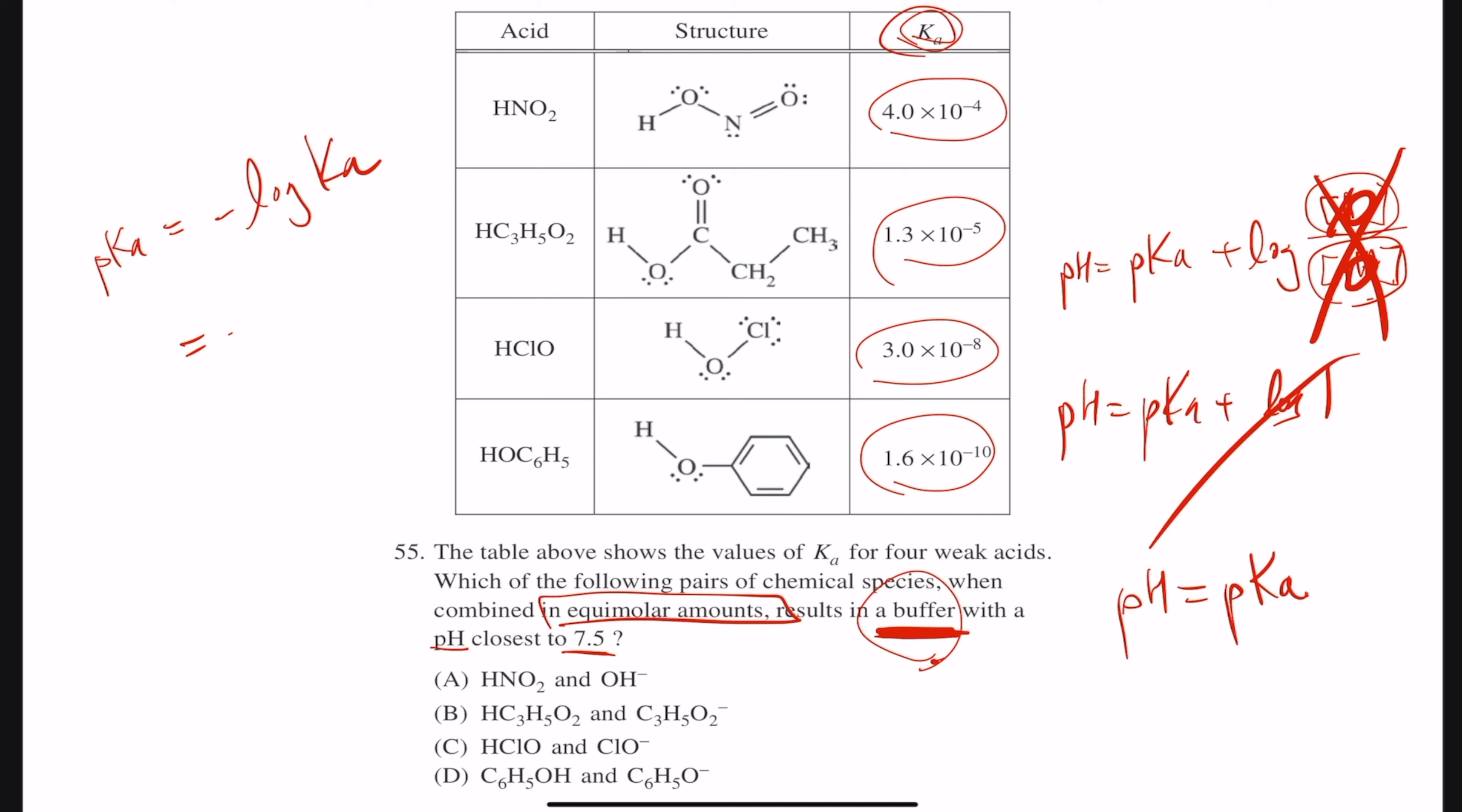So long story short, negative log of whatever value should get me something close to the pH of 7.5, so that's what it is. And if you guys look at it, well, I hope you know how to do the math, and basically it's going to be this, HClO, which is why answer choice C would be correct, HClO and its conjugate base, ClO minus.